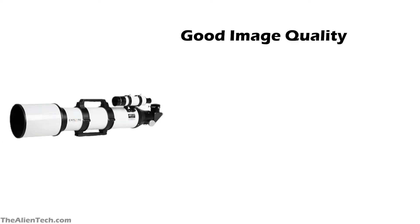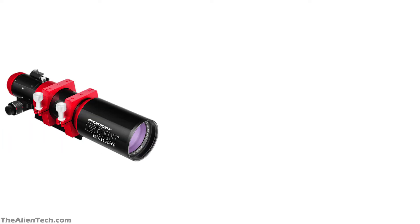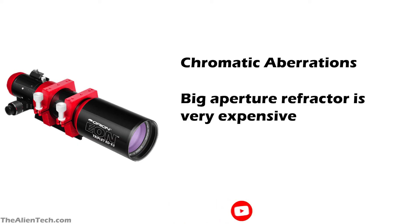Advantages of refractor telescopes: the image quality you get is good, these telescopes do not need any collimation, and since they are closed-tube telescopes, they do not need frequent cleaning. Disadvantages: they use lenses that cause refraction of light, resulting in chromatic aberrations, and a larger lens is very costly to manufacture, so these telescopes get very expensive with an increase in aperture size.